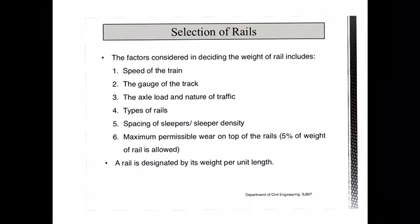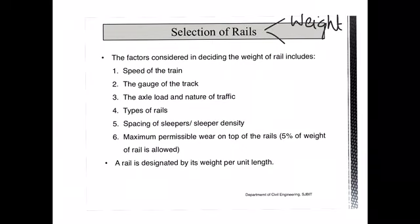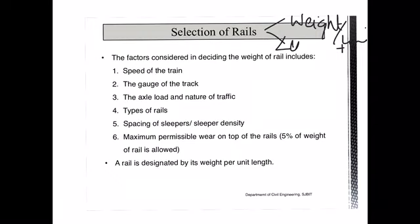First we will look into how to select your rail section. The selection of rail section is with respect to what should be the weight of the rail to be provided. So you will manufacture your rail section — what weight it should have. Usually it will be represented in terms of weight per unit length: how much weight per meter length of your rail section. And also how to select the length of the rail section. These will be studied in the further slides.